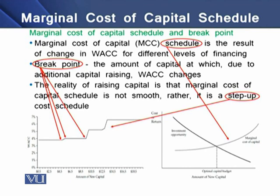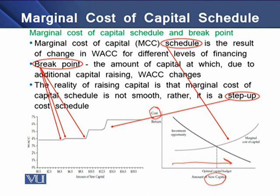On the screen you can see the graphical presentation of marginal cost of capital. We see that the MCC schedule is the result of change in WACC for different levels of financing. On the right panel at the bottom of the screen, we have the cost or WACC on one axis and the amount of new capital on the other. As we raise the amount of capital, our cost of capital goes on decreasing, and vice versa.